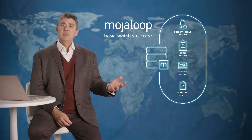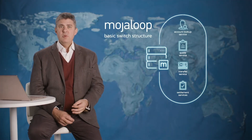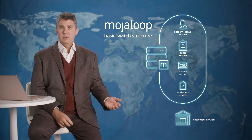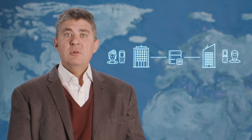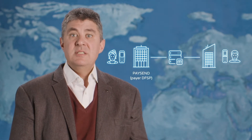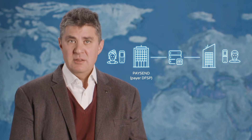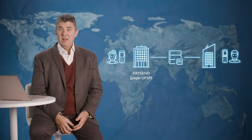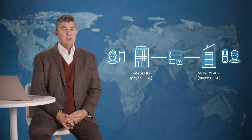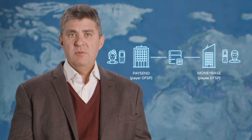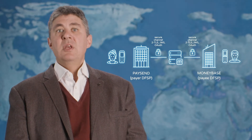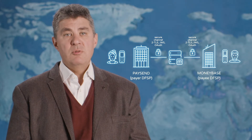Settlement services within Mojaloop support a number of core settlement algorithms and provide interfaces for custom integration with the ultimate settlement provider, a commercial or central bank. Connected to the switch are the DFSPs where Gladys and John have their accounts. We'll call Gladys's provider PaySend, since it is the payer participant sending the funds, and John's provider MoneyBase, since it is the payee participant receiving the funds. The connections between Mojaloop and these two providers are secured using industry best practice, including cryptographic signing that ensures transactions are non-reputable.